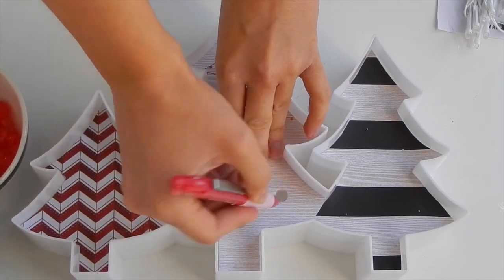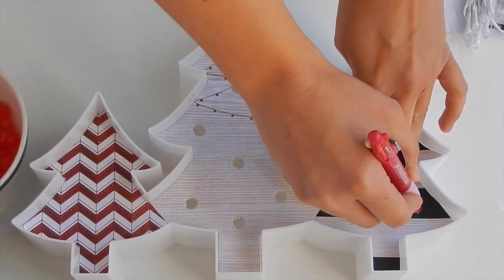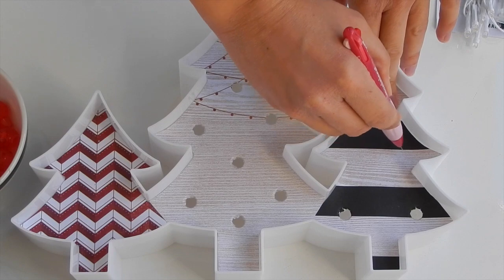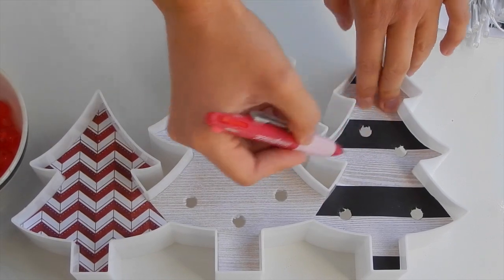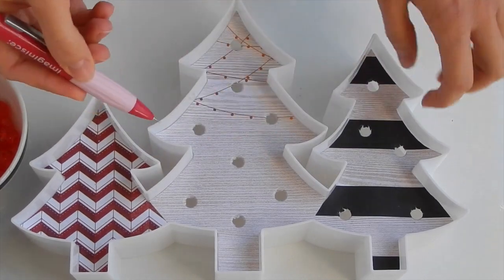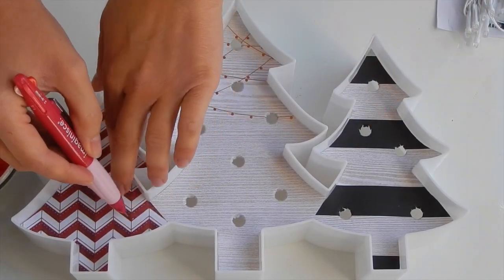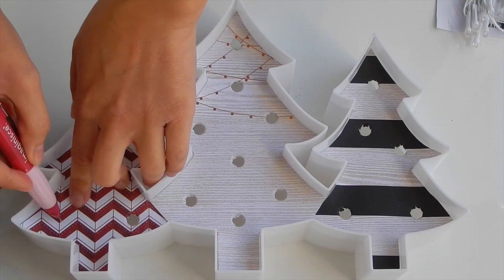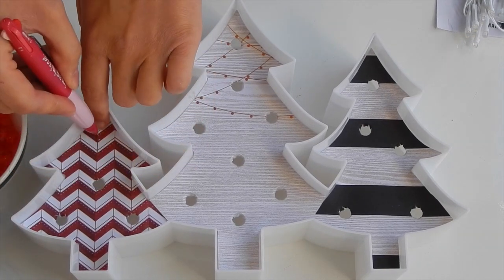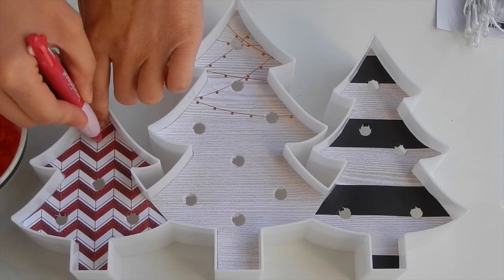Once I'm done that, I take my paper piercer and push it through the front so it gives me that perfect round hole. I just use a little bit of force, and then I'll know exactly where my lights need to be. I don't need to do any further cutting or poking or punching.